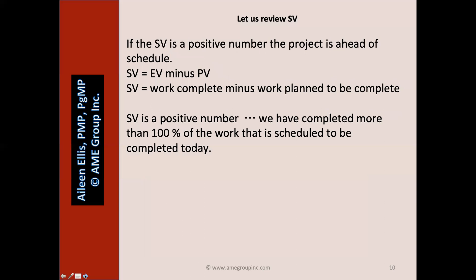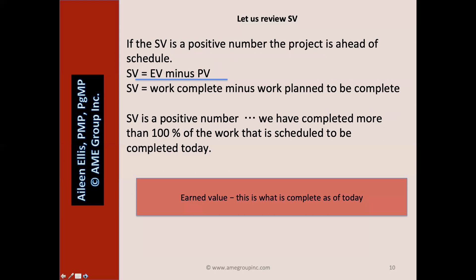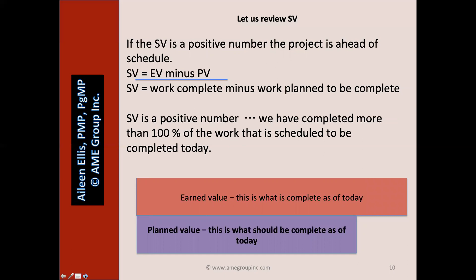If the schedule variance is a positive number, the project is ahead of schedule. Schedule variance equals EV minus PV — work complete minus work planned to be complete as of today. If it's a positive number, we've completed more than 100% of the work that is scheduled to be completed today. Here we see our earned value (what is complete) is greater than our planned value (what should be complete) — we have more work complete than we planned; our schedule variance is a positive number.